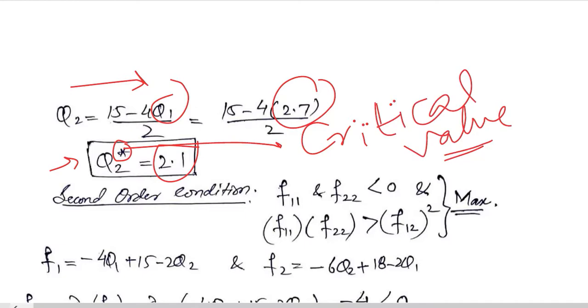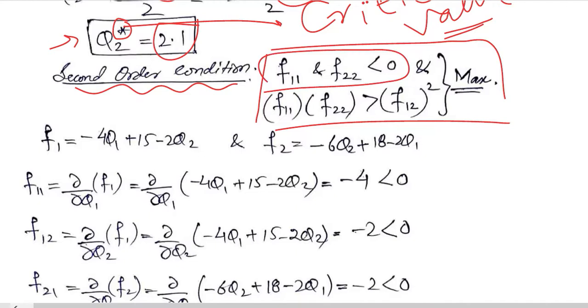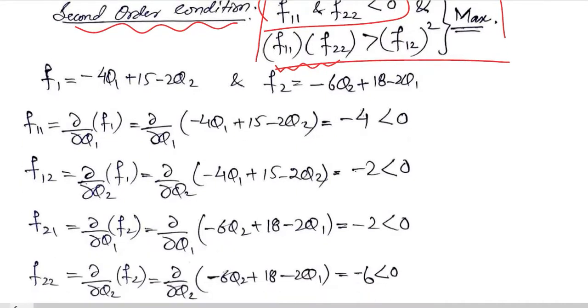After noting these two values Q1 and Q2, we can come to the second order condition. You know that this is the expanded form of the second order condition, in which the first thing that we observed was the negativity of the second order direct partial derivatives. Then we are going to see that the product of the second order direct partial derivatives is greater than the square of the second order cross partial derivative. So we want the value of F11, F22, and F12.